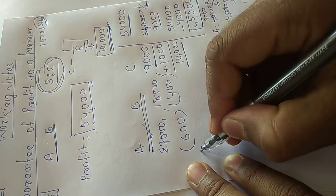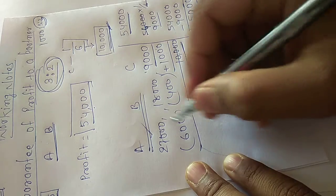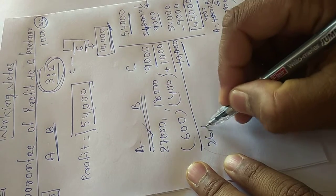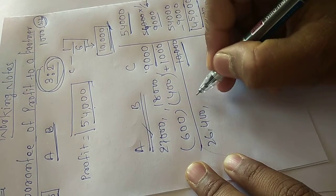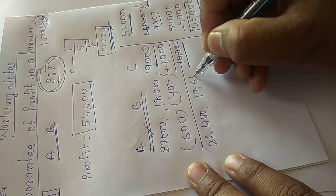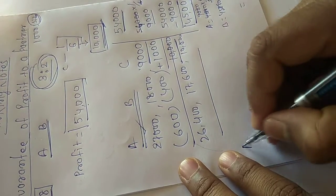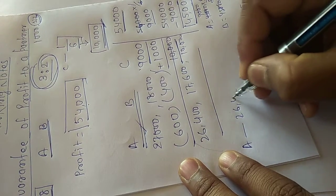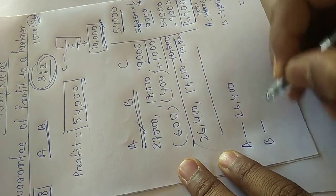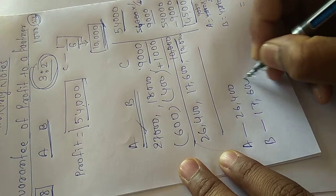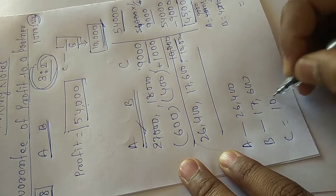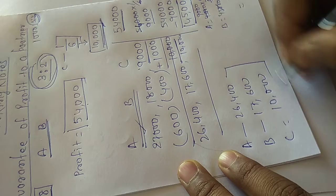Deduct this amount from A and B. So A is equal to 26,400 and 17,600 for B, and C balance is equal to 10,000. So share of profit A is 26,400, share of profit of B is 17,600, and share of profit C is equal to 10,000. This is your answer.